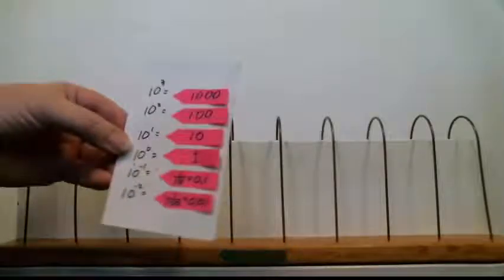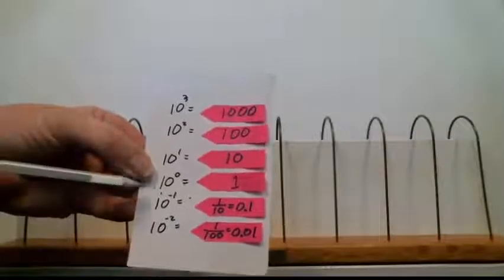I have my powers of 10 listed here. Notice that we go from 10 to the 0, which is 1, 10 to the 1st, 10 to the 2nd, 10 to the 3rd, which is 1000.